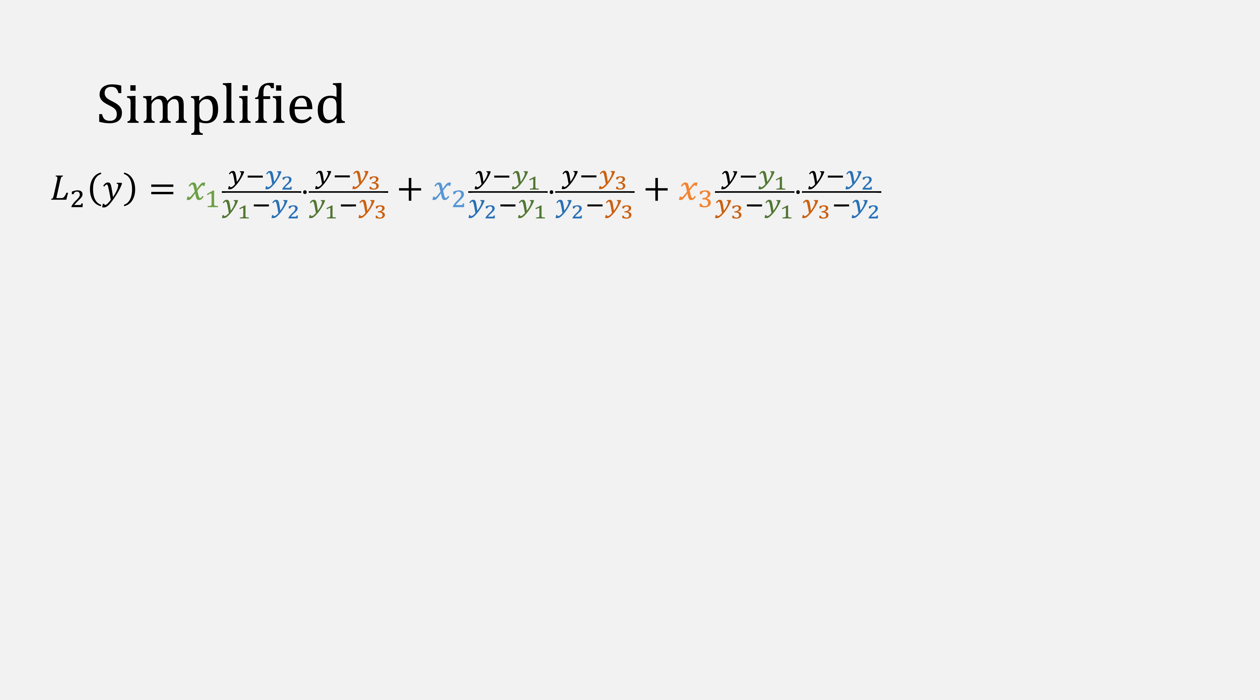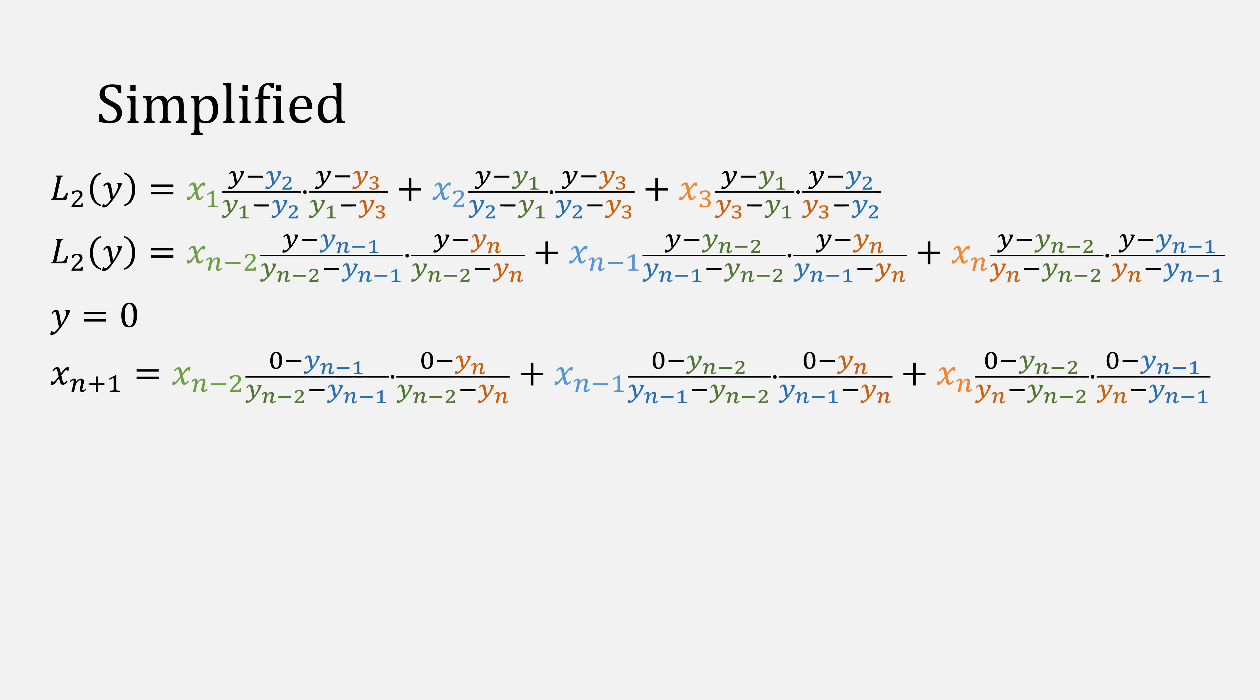So given our function for a Lagrange polynomial of y, we'll generalize things in terms of n. We care where y is equal to zero, so simply plug in zero. This will give us our new x point. We can simplify this equation now to remove the y, and all we have now are just simply constants to give us our new x value.